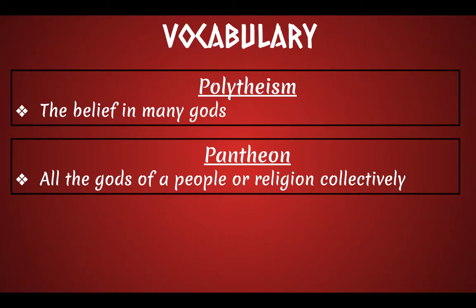So vocab — a couple words that are important to understand with religion in this regard. First one is polytheism. Polytheism is the belief in many gods. In ancient Egypt they believed in multiple gods. This leads to the second one which is pantheon. A pantheon is all of the gods of a people or a religion collectively. So when we're talking about these Egyptian gods, that's the Egyptian pantheon. In the next unit when we talk about the Greek gods, that's the Olympic pantheon. Those are the different gods that are within that culture.